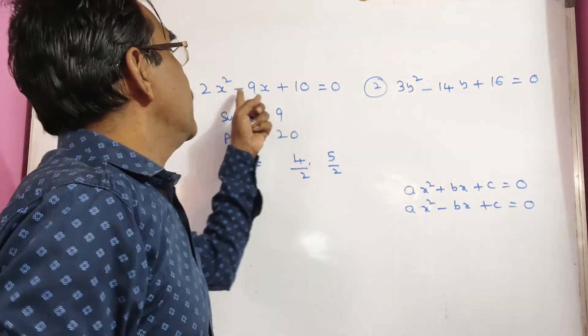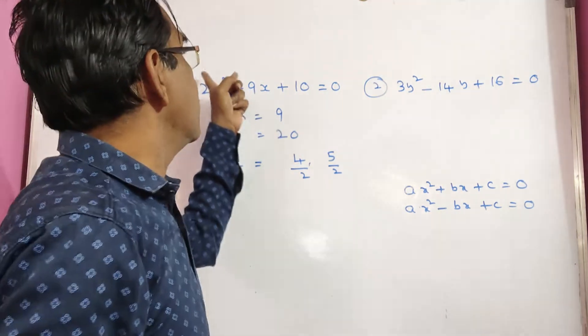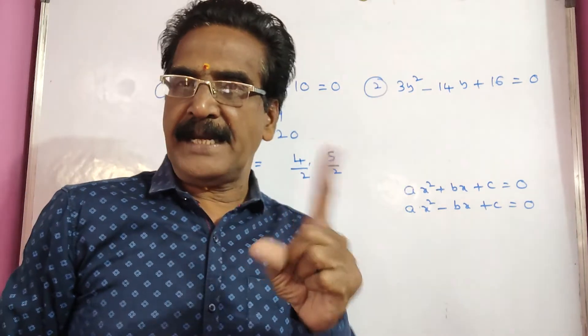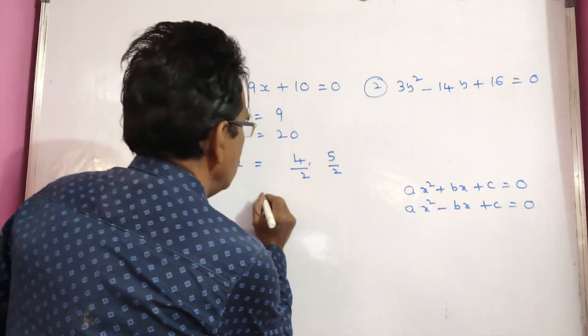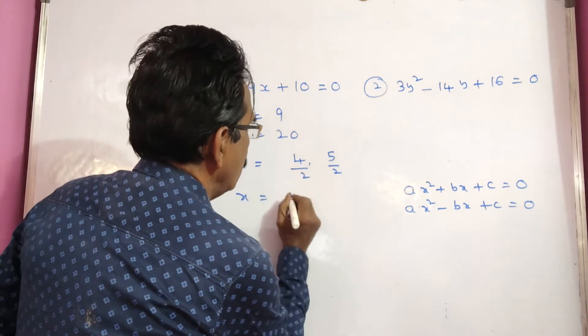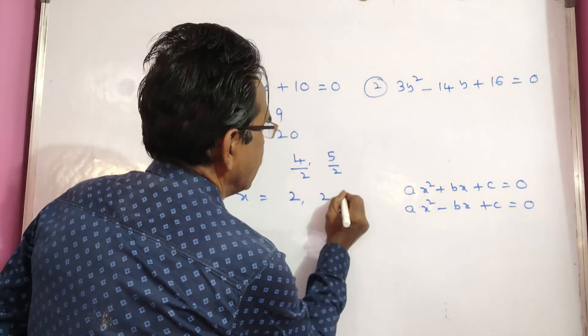And then coming to sign, here b is minus and c are plus. If b is minus and c are plus, both the roots are positive. So x values are 2, 2.5.